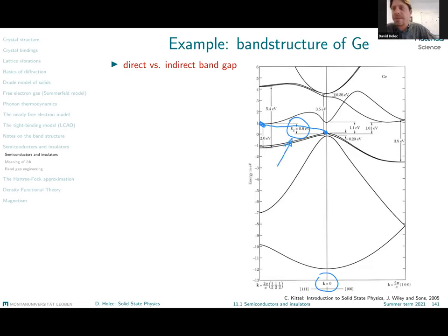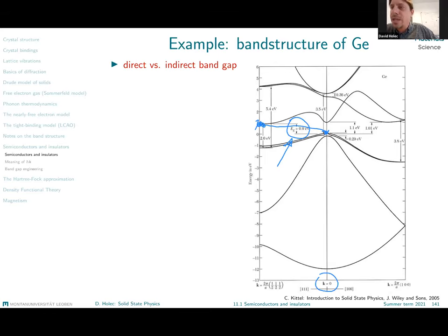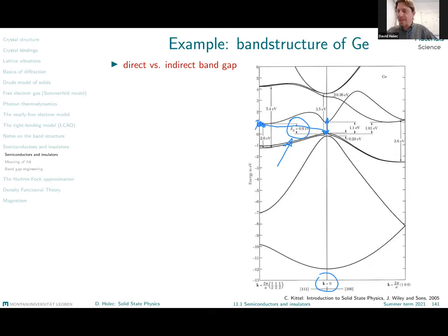Since transitions must obey not only energy conservation but also momentum conservation, such an excitation requires a scatterer that provides non-zero momentum. Therefore, to excite an electron across this indirect gap, we cannot rely on photons alone — which carry essentially no momentum — we also need phonons or other quasi-particles that carry the required momentum. When exciting by photon only, we search for the smallest direct gap, which in germanium is at the gamma point but is larger than the indirect band gap.